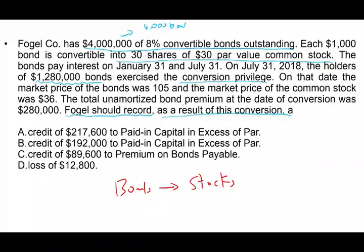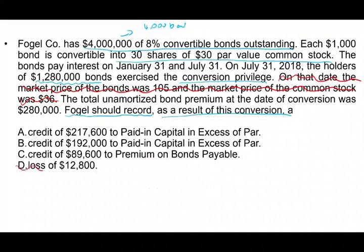They're giving you information that's useless for us. When you convert, the market price is irrelevant — you don't use any market information. You're going to convert based on the book value. Therefore, you can eliminate that information — it's given to confuse you. Under the book value method, you have no gain and no loss. Therefore, you can also eliminate answer D immediately.